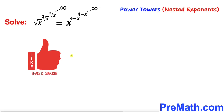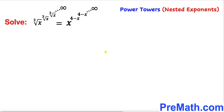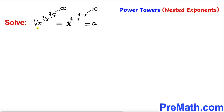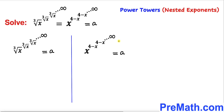Please don't forget to give a thumbs up and subscribe. Let's get started with the solution. Our very first step: let's assume that these infinite power towers converge to some finite number a. So we write the whole equation equals to some finite number a. Then we equate the left-hand side to a as our first equation, and the right-hand side to a as our second equation.